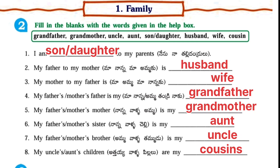Second one: My father to my mother is husband. Third one: My mother to my father is wife. Fourth one: My father's or mother's father is my grandfather.